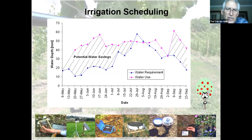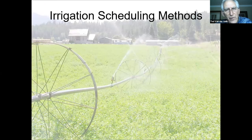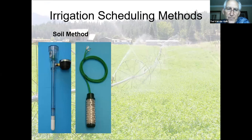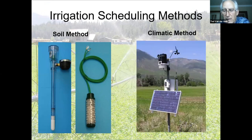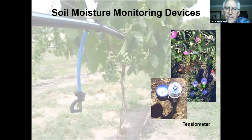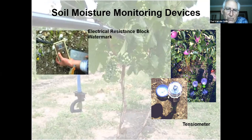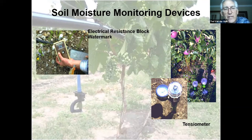There are a number of irrigation scheduling methods: soil moisture monitoring or climatic data from a weather station. For soil moisture, options include tensiometers — which I like because you can just read them with nothing electronic required — or electrical moisture resistance blocks like the Watermark sensor, which requires a meter to read but you only need one meter and can install many units.